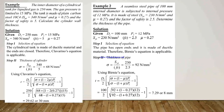Now we see the next example, where a seamless steel pipe of 100 mm internal diameter is subjected to internal pressure of 12 MPa. It is made of steel with Syt equal to 230 N/mm², mu equal to 0.27, and factor of safety of 2.5. We have to determine the thickness of the pipe. Given data: internal diameter = 100 mm, internal pressure = 12 MPa, yield strength = 230 N/mm², factor of safety = 2.5, mu = 0.27.